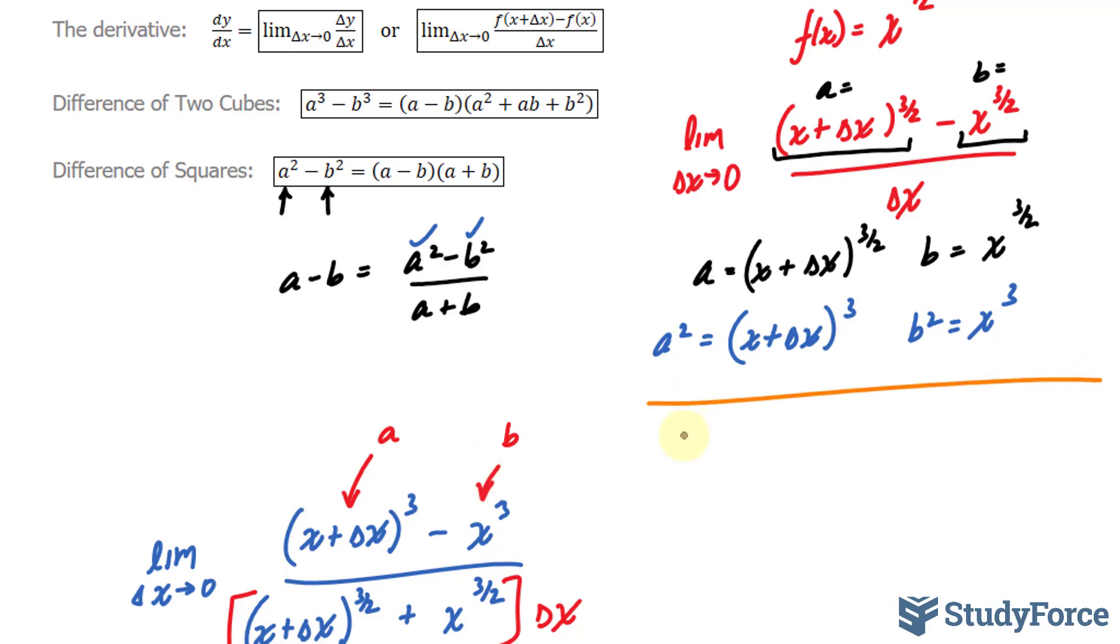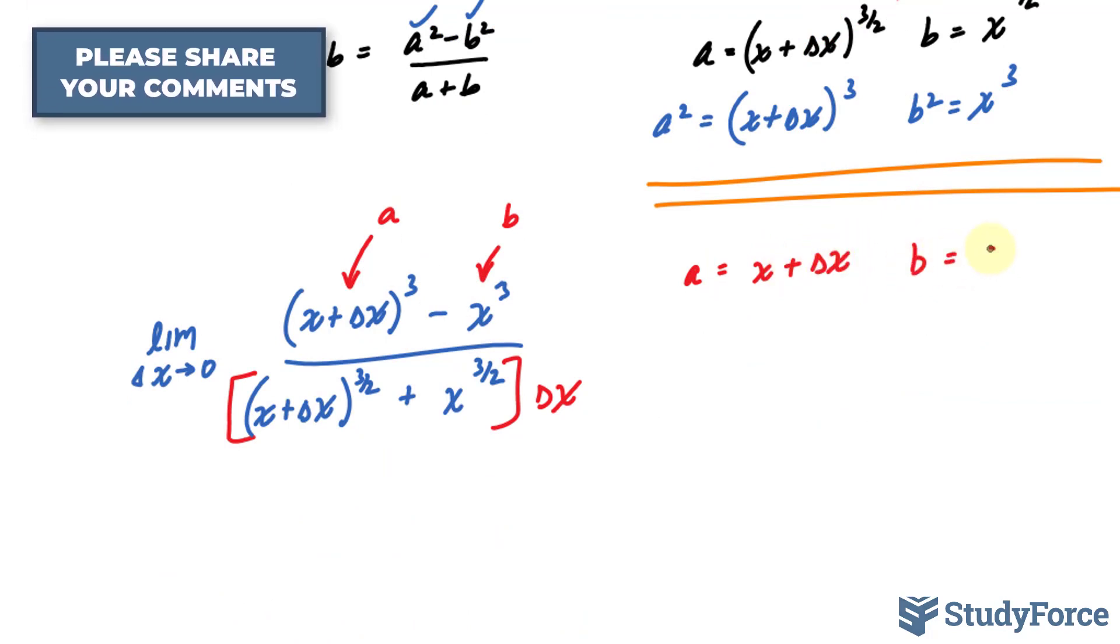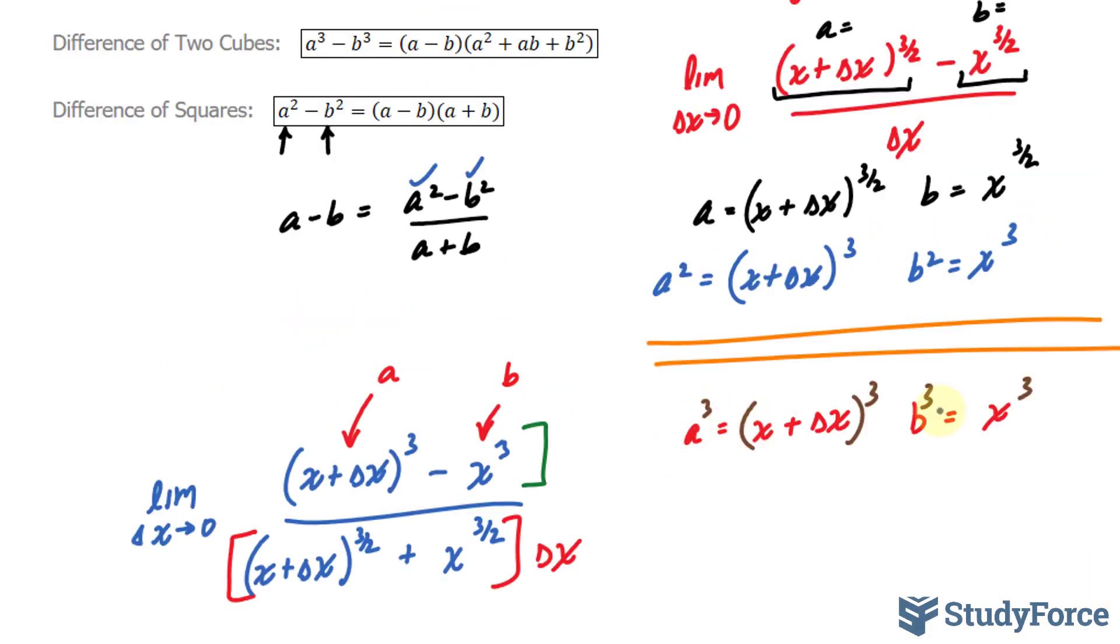So let's go ahead and do that. A is equal to x plus delta x and b is equal to x. What I'll do next is raise both sides to the power of three where I end up with a to the power of three and over here b to the power of three and x to the power of three. Now that I found a to the power of three and b to the power of three I can replace this whole expression with the right side of the difference of cubes formula.